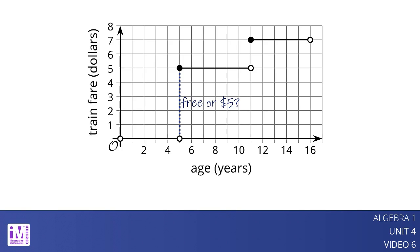On the graph, one segment ends at 5 comma 0 and another segment starts at 5 comma 5. But the function cannot have both 0 and 5 as outputs when the input is 5.